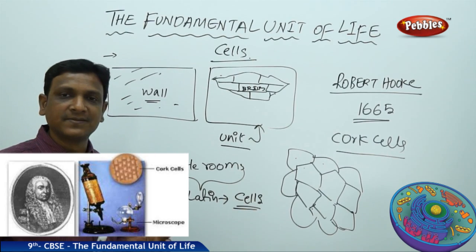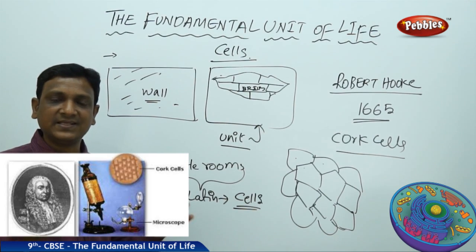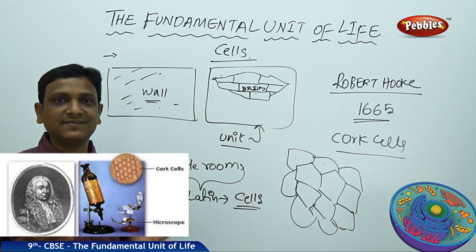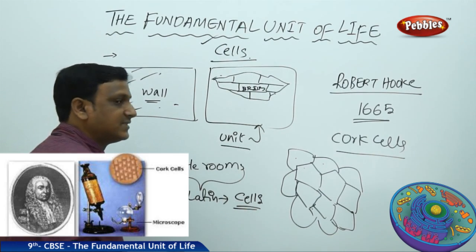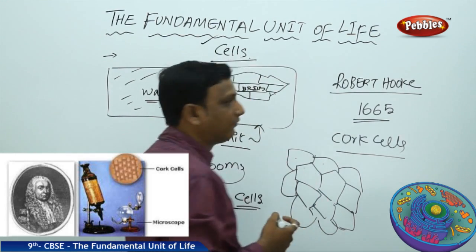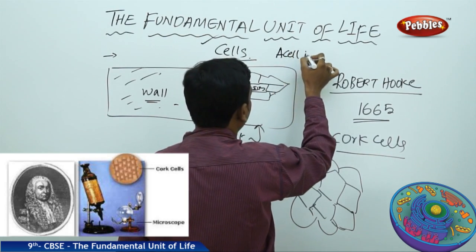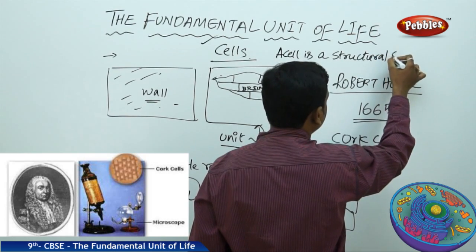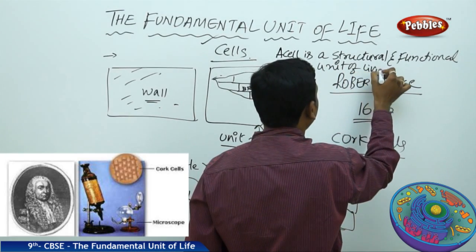So if each and every cell carries out these activities, and if each and every cell is healthy in our body, then we are healthy. If the functioning of a cell is disturbed, then the functioning of the body is also disturbed. So the cell is the functional unit. We can understand that it is the fundamental unit, and at the same time it is the functional unit as well as the structural unit. A cell is the structural and functional unit of living organisms.